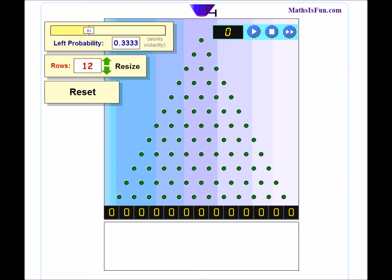You can see the probability that my bean goes left is set to a third, which means the probability that my bean goes right is going to be two thirds. I've got twelve rows. What's going to happen is my bean's going to come out of the machine, it's going to hit a peg and it's either going to bounce left or right at each peg that it hits, and it's going to find the path down through the pegs and end up in one of these cells at the bottom.